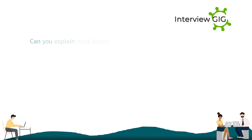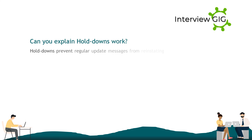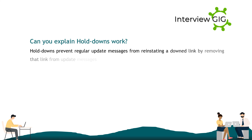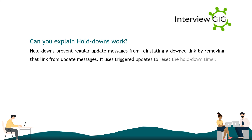Can you explain how hold-downs work? Hold-downs prevent regular update messages from reinstating a downed link by removing that link from update messages. It uses triggered updates to reset the hold-down timer.